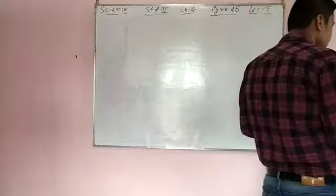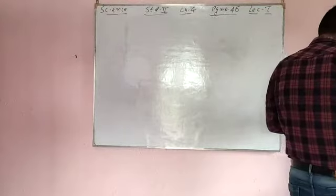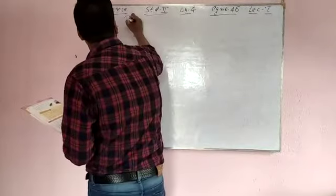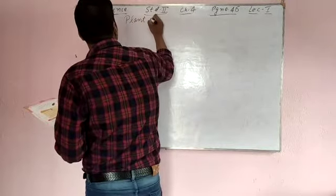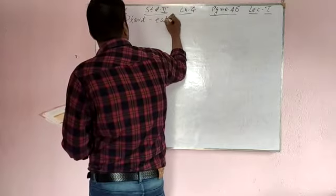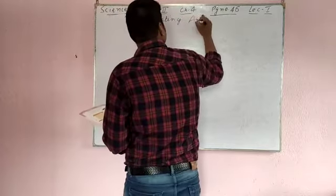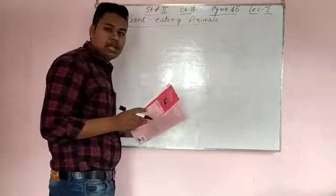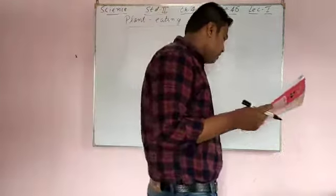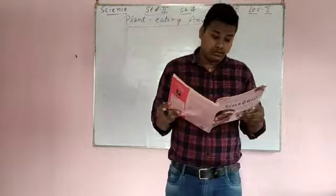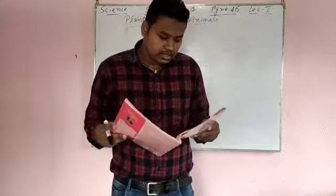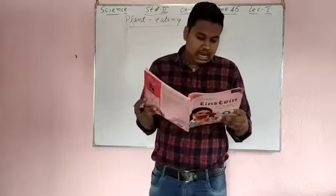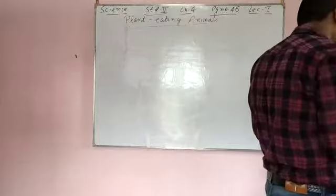Page number 46, chapter 4. The topic is plant-eating animals. Animals that eat plants or the different parts of plants are called plant-eating animals. Giraffe, elephant, deer, and zebra are plant-eating animals.